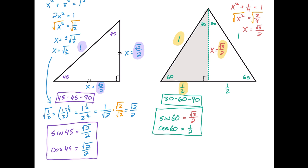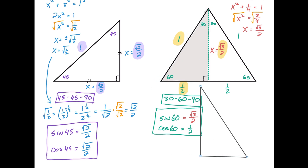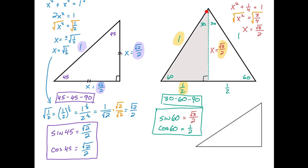What if we were to take this whole triangle and rotate it so it's oriented differently? Here I drew the same triangle but just rotated. Now here is the √3/2 side, here is that same 90 degrees, this is still a value of one, and this is 1/2.